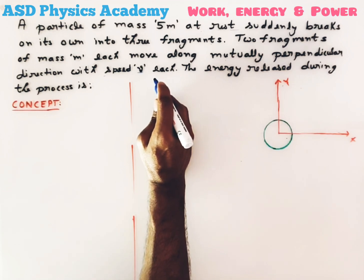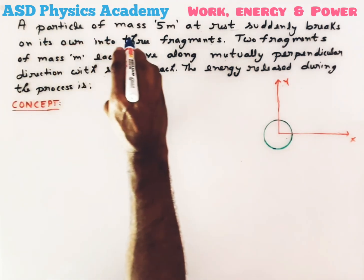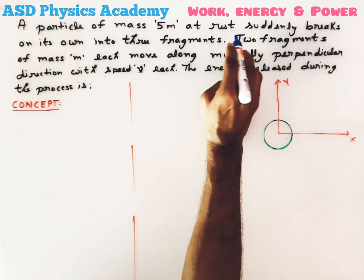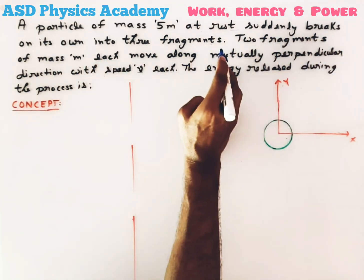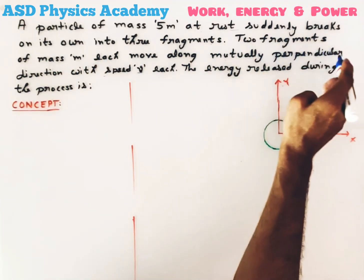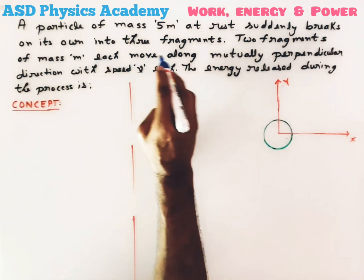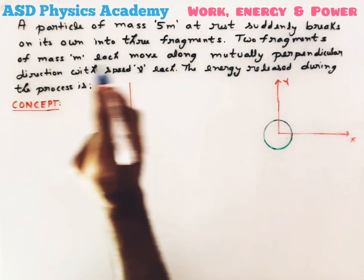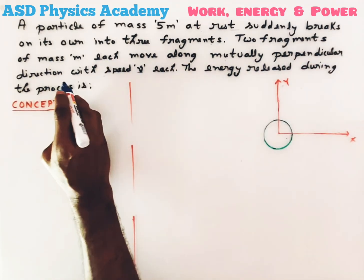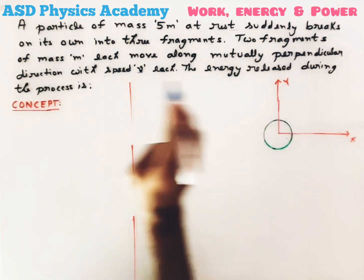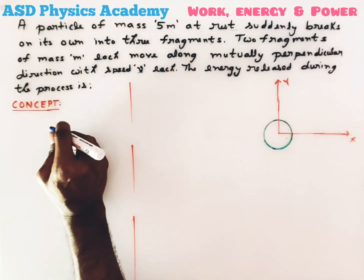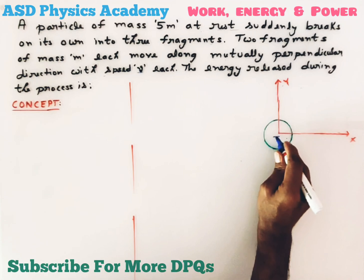Don't forget to comment your answer. Now let's see today's question: a particle of mass 5m at rest suddenly breaks on its own into three fragments. Two fragments of mass m each move along mutually perpendicular directions with speed v each. Find the energy released during the process.